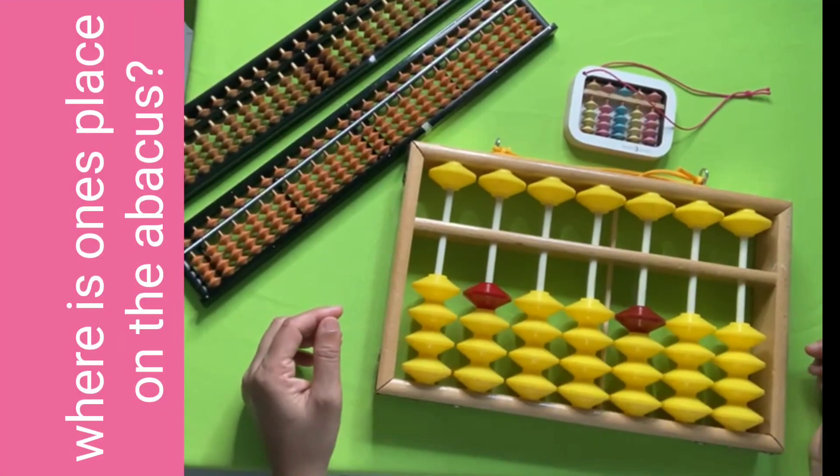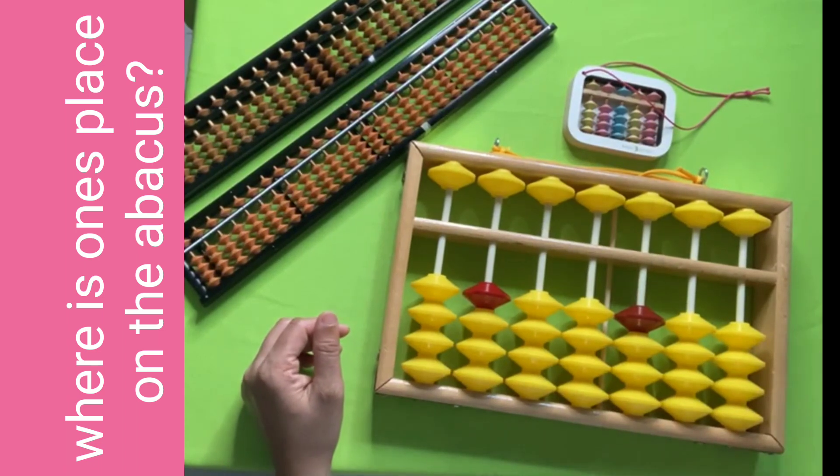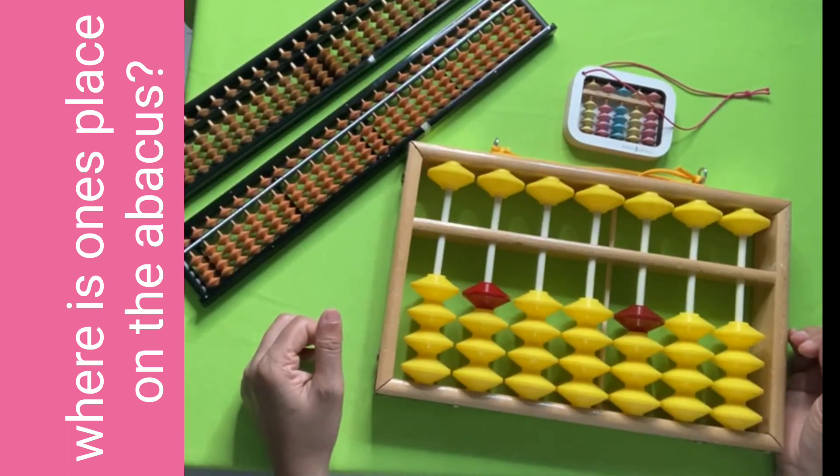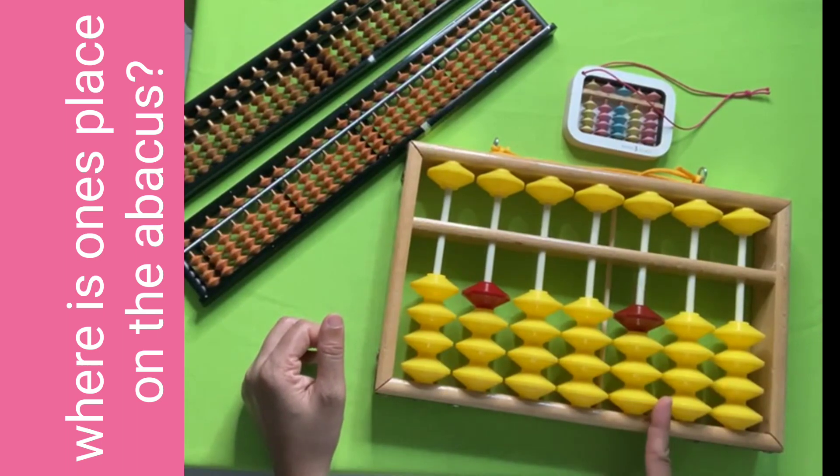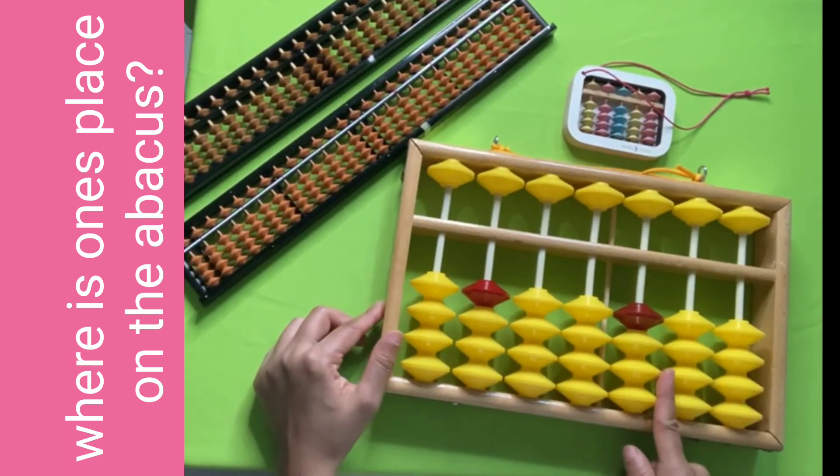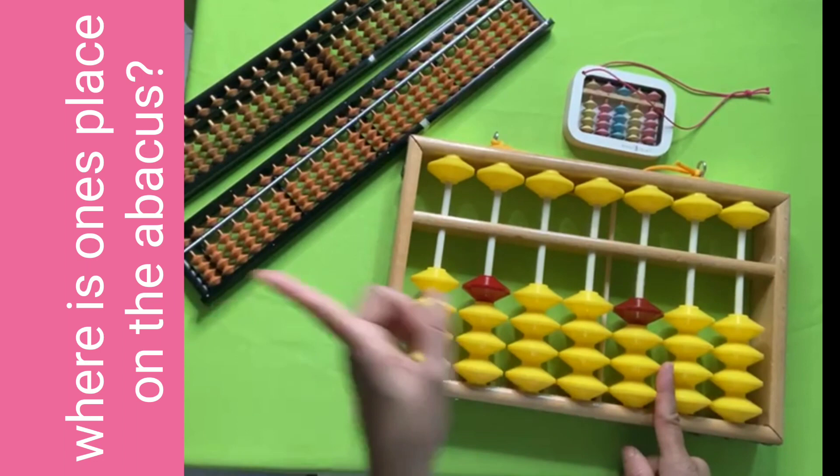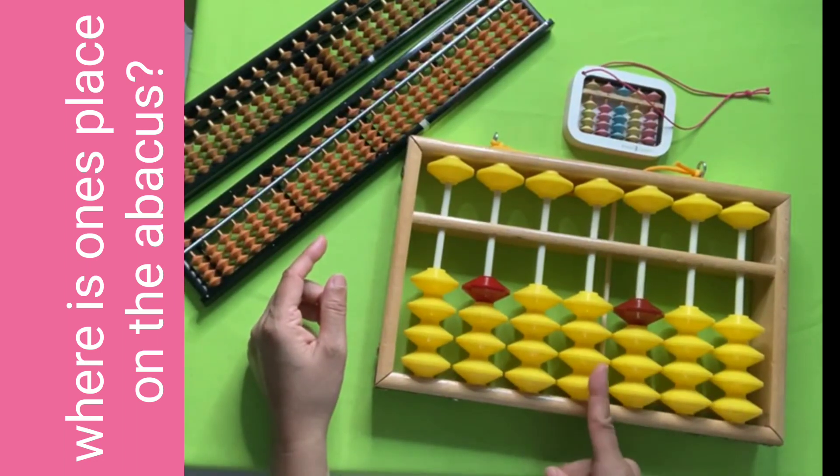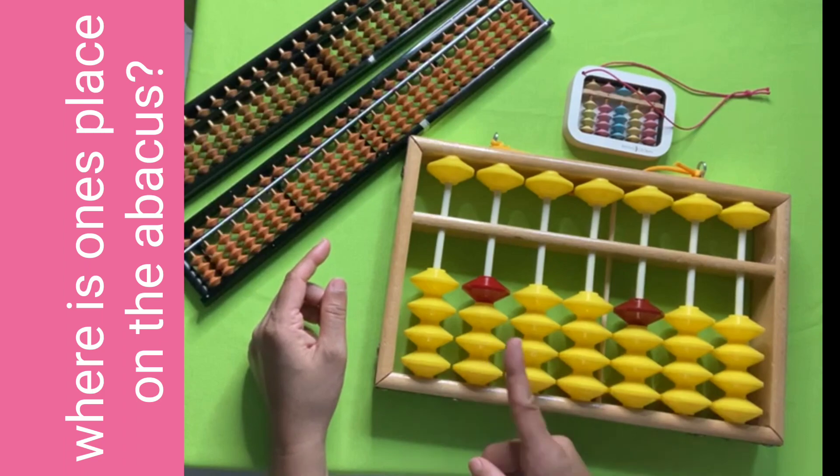Where is the ones place on the abacus? Your marked rod is the ones place. This is my marked rod, means this is my ones place. To the left side: tens place, hundreds place, thousands place, ten thousands place.